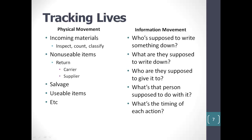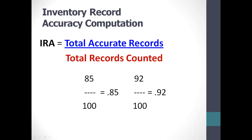Before you do anything, you should start your corrective efforts by establishing a baseline of where your inventory record accuracy is right now. Inventory record accuracy, IRA, is the percentage of agreement between the record count and the shelf count. A quick, accurate method of establishing your current IRA is to perform a test count. Select 100 items which represent a cross-section of all items.